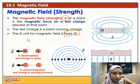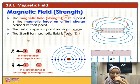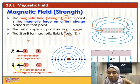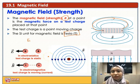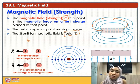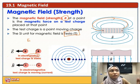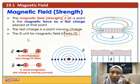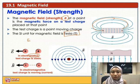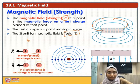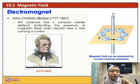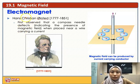In electrostatics the test charge is static. In electromagnetics, the test charge is moving because we have current. The difference between electrostatics and magnetism is basically the movement of charges. In electrostatics, charges are static or come to a stop. However, in magnetism you need to have current, and current means flowing charges — so in electromagnetics the test charge is moving.